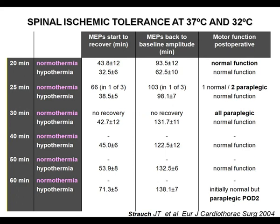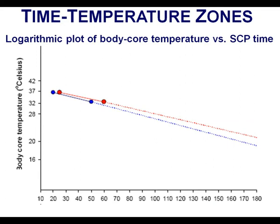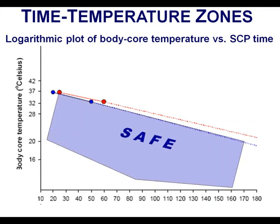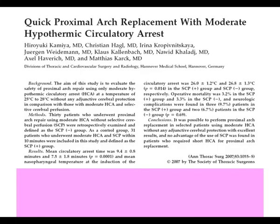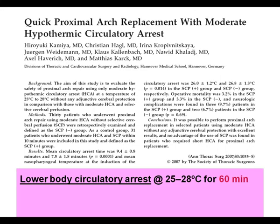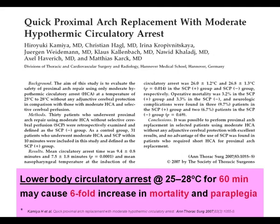This translates into a time-temperature graph determining safe versus unsafe cross-clamp durations depending on temperature. Camilla and Heigl from the Hanover group were first to report on the dangers of prolonged lower-body circulatory arrest with only moderate hypothermia. In the subgroup with lower-body circulatory arrest for more than 60 minutes at core temperatures between 25 and 28 degrees Celsius, mortality was 27% and the paraplegia rate was 18%.